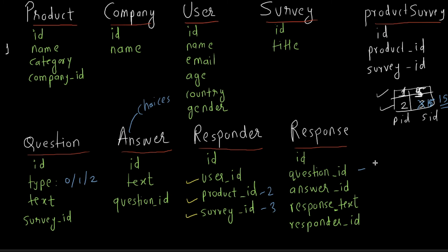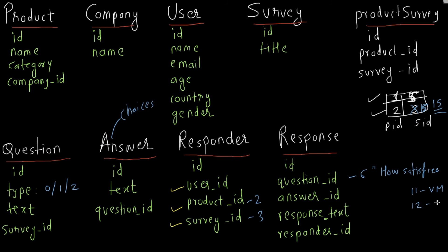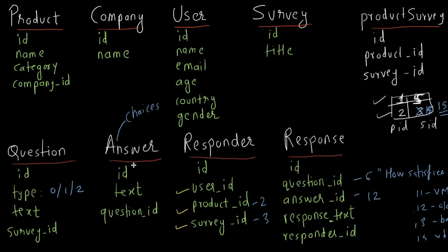The reason is subjective questions of type 0 have no entries in the answer table, so there is no answer_id. Without question_id in the response table, we wouldn't know which question a subjective response belongs to. So we need question_id for subjective questions and answer_id for objective questions. For example, question_id 6 ('How satisfied were you with the purchase process?') has answer options 11 (Very much), 12 (Okay), 13 (Bad), 14 (Very bad). If the user selects option 12, answer_id = 12, no response_text, and the responder_id links to the user, product, and survey context.